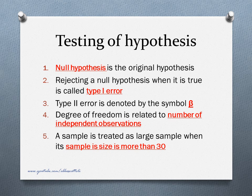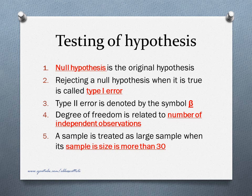Now testing of hypothesis. The null hypothesis is the original hypothesis. The alternative hypothesis is the negation of the null hypothesis; a researcher's hypothesis is the alternative hypothesis. Rejecting a null hypothesis when it is true is called Type 1 error. Accepting a null hypothesis when it is false is called Type 2 error. Type 2 error is denoted by the symbol beta and Type 1 error is denoted by the symbol alpha. Degree of freedom is related to the number of independent observations. If there are N observations, generally N minus 1 will be the degree of freedom. A sample is treated as a large sample when its sample size is more than 30.